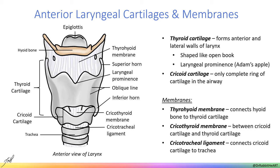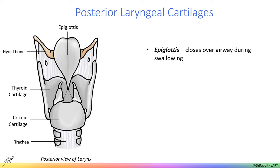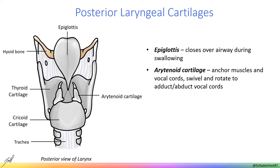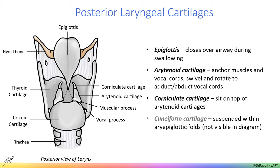Now we are looking at the larynx from the back. Here we can appreciate the wider posterior aspect of the cricoid cartilage and see the full epiglottis. The epiglottis is leaf shaped and composed of elastic cartilage; it functions to protect the airway during swallowing. Arytenoid cartilages sit on top of the posterior portion of the cricoid cartilage and have attachment points for vocal cords, called the vocal process, and muscles, called the muscular process. They can rotate, glide, or swivel in several directions to adjust tension of the vocal cords and size of the airway. Tiny corniculate cartilages sit on top of the arytenoid cartilages. Cuneiform cartilages are suspended in mucosa of the larynx called the aryepiglottic fold.